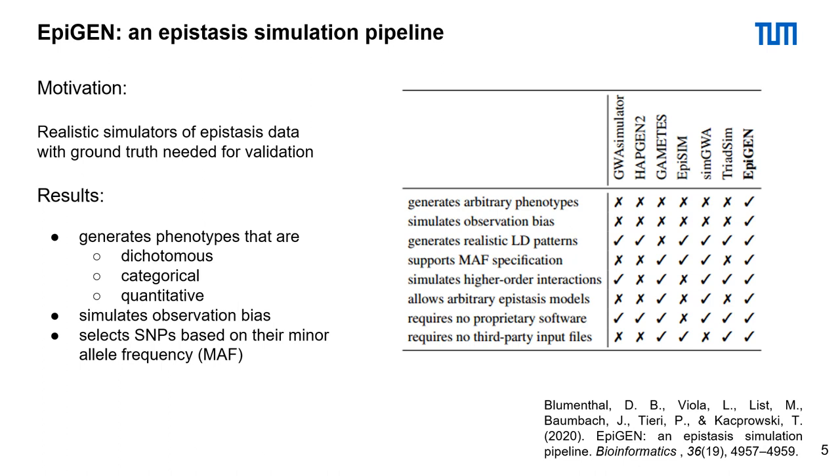Firstly, we developed Epigen, an epistasis simulation pipeline. Epigen is a realistic simulator of epistasis data with a ground truth. You can see the features of Epigen in the table on the right side. Epigen can faithfully reproduce many more characteristics of realistic data than other simulators.